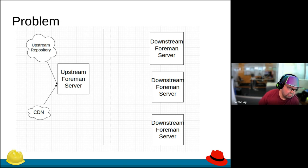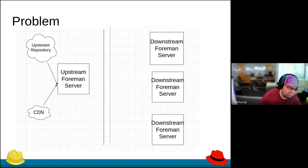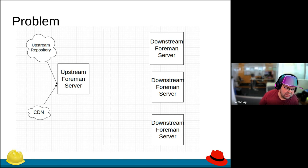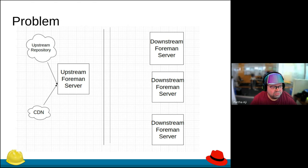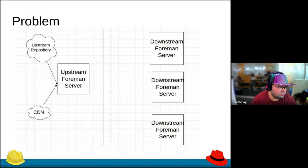What will happen is it will export content to different formats. The user then takes a USB, flies somewhere, goes to the secure installation, and imports the same content into downstream. We have had this for a while, but Pulp3 made it much easier and actually much better, in my opinion.